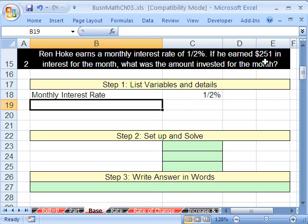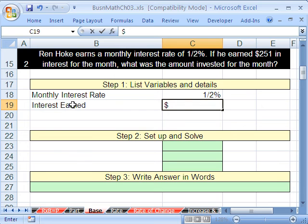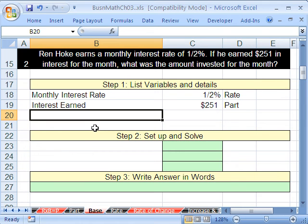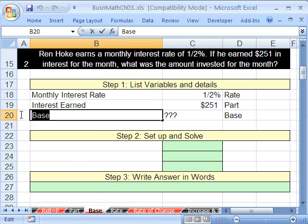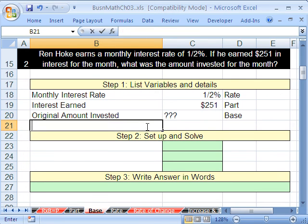The next bit of information, if the interest earned, okay, so interest earned. And that's going to be $251. I can format this one as I type, $251, and this is the rate, which would make this the part. So the thing we are missing is the base, and we don't know what that is. And the name for the base is original amount invested.